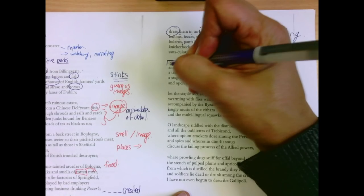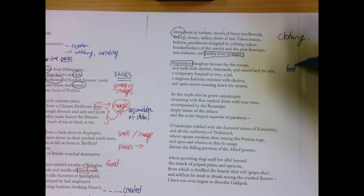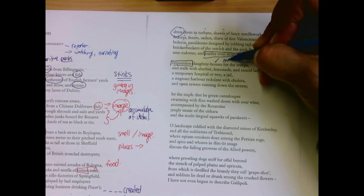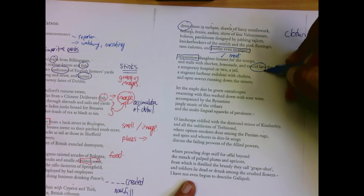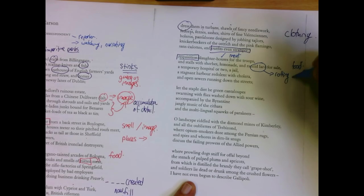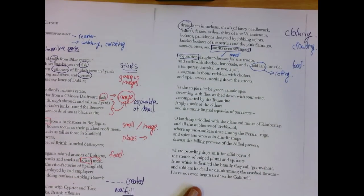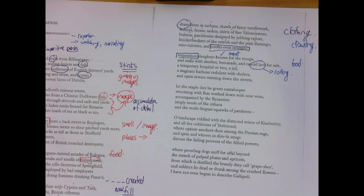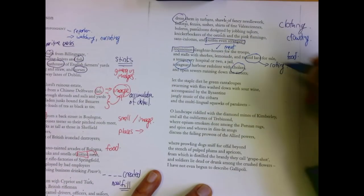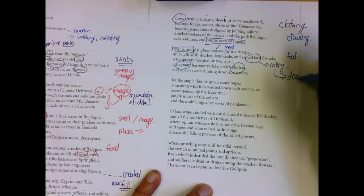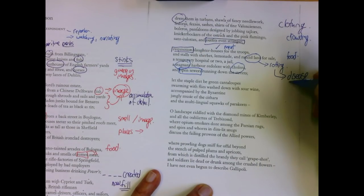Go ask for slaughterhouses for the troops. Now we get more food again. We need meat. We need lemonade, rancid lard, which really emphasizes the rotting, which already we had in the crowding. A temporary hospital or two, a jail, a stagnant harbor, redolent with cholera. Now we see the rotting leads to disease. And open sewers running in the streets.